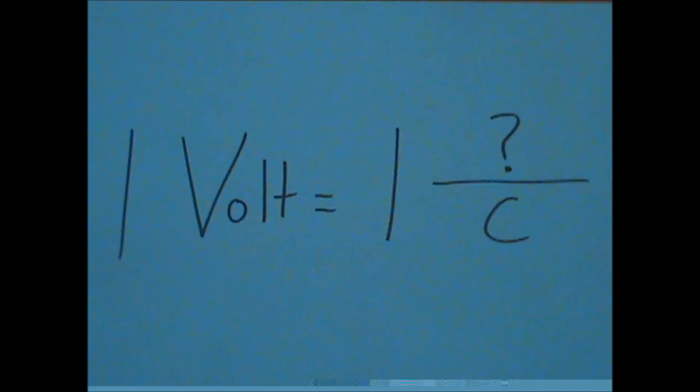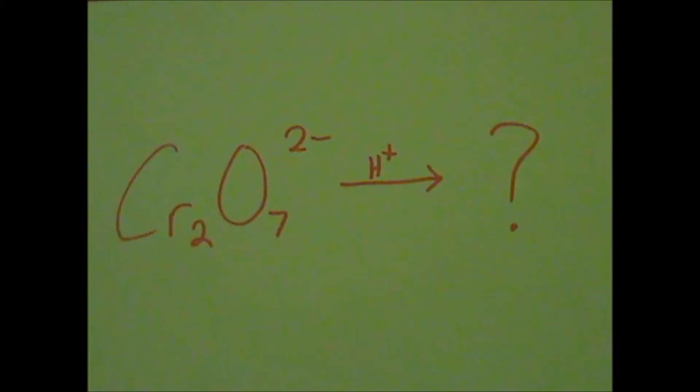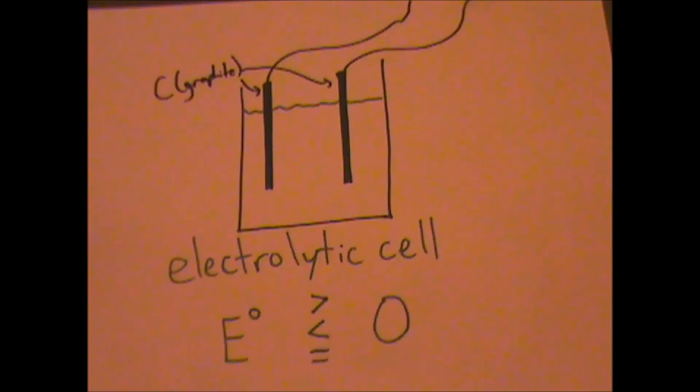Joule. Cr3+. Voltage is negative so it will be less than 0.